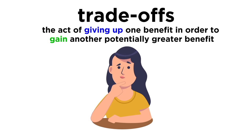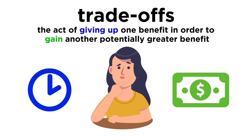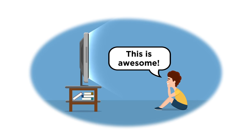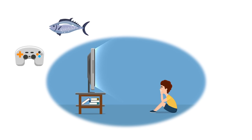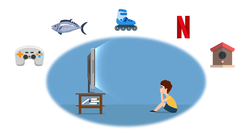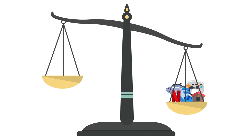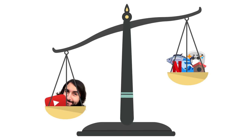A trade-off is the act of giving up one benefit in order to gain another potentially greater benefit. For example, you are benefiting from watching this tutorial right now, but you chose to watch it because the perceived benefit outweighs other things that could also benefit you. Right now, you could instead be playing video games, or fishing, or rollerblading, or watching Netflix, or building birdhouses — but watching this tutorial benefits you more at this moment.